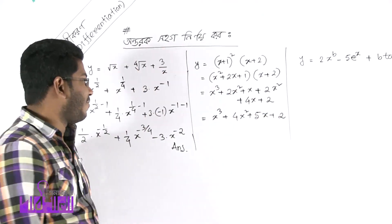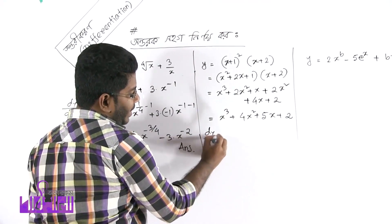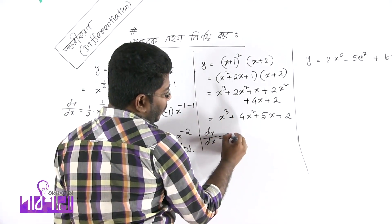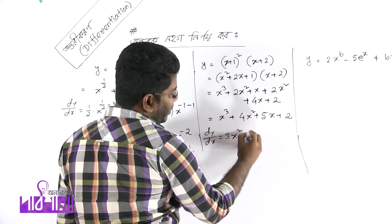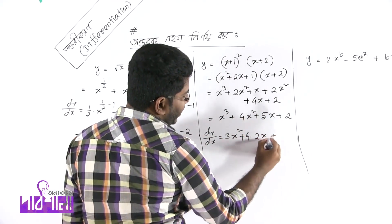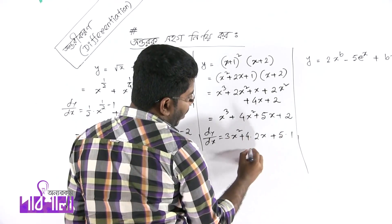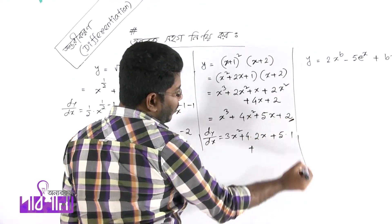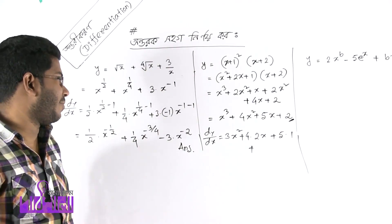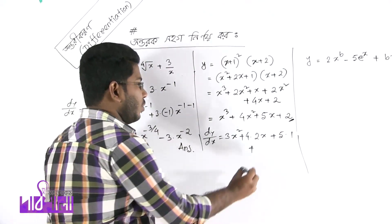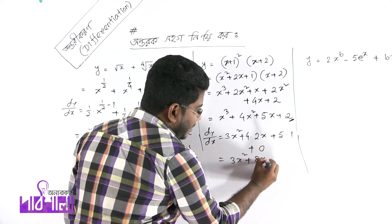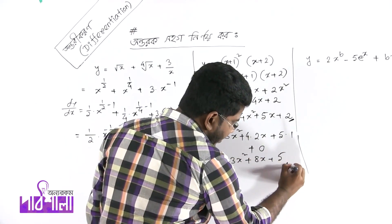Now we differentiate this expression. dY/dX: differentiating x³ gives 3x², 4x² gives 8x, 5x gives 5 into 1, and the constant term differentiates to 0. So the result is 3x² + 8x + 5. This is the answer.